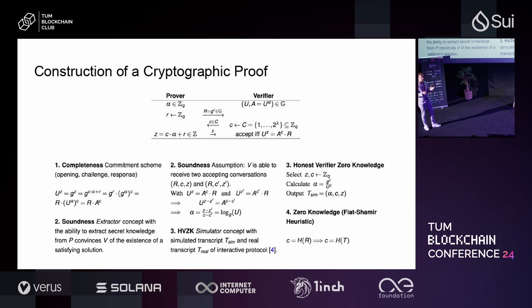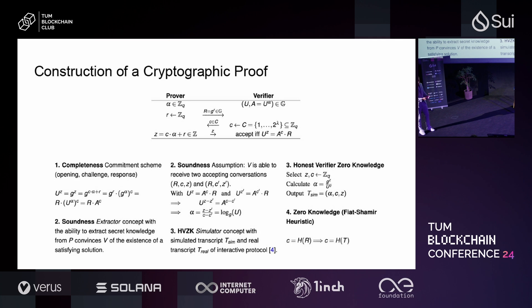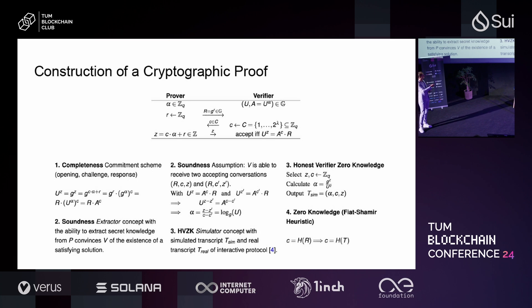Soundness is typically shown via some impossibility assumption. You give the verifier two instances of this protocol run after each other, receiving two transcripts where the prover uses the same values — which is not possible in reality, since every time the prover participates it should use different randomness. By obtaining these transcripts twice with the verifier selecting a different c prime, the verifier is able to solve the equation for alpha and verify whether this alpha value exists or if an impossibility results.